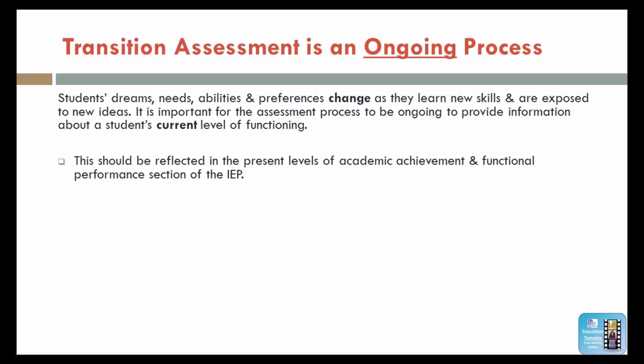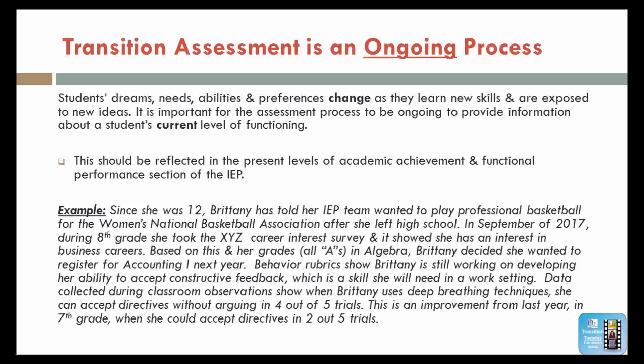Here's an example of a present level of performance. Since she was 12, Brittany has told her IEP team that she wanted to play professional basketball for the Women's National Basketball Association after she left high school. In September of 2017, during 8th grade, she took a career interest inventory survey and it showed that she was interested in business careers. Based on this and her grades — all A's in algebra — Brittany decided that she wanted to register for Accounting 1 next year. Behavior rubrics show Brittany is still working on developing her ability to accept constructive feedback, which is a skill she will need in a work setting. Data collected during classroom observations showed that Brittany uses deep breathing techniques and that she can accept directives without arguing in 4 out of 5 trials. This is an improvement from last year in 7th grade when she was accepting directives in 2 out of 5 trials.